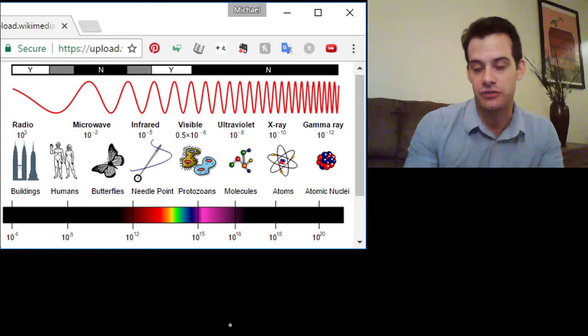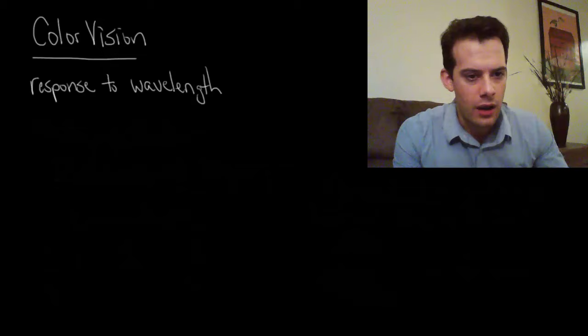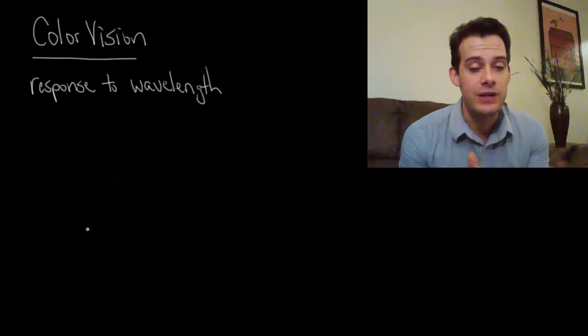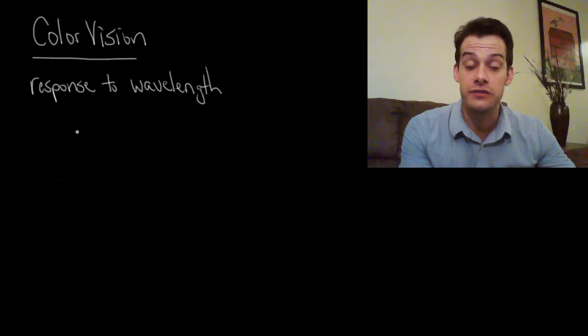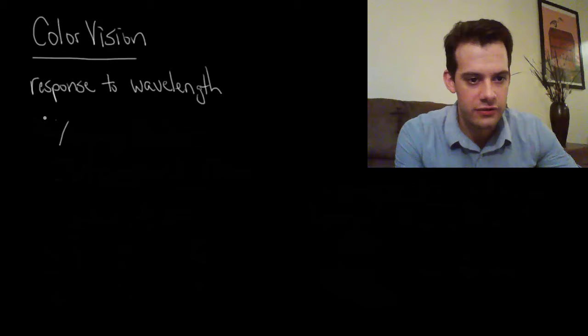Okay so let's get back to color. Alright so we have these different frequencies we can see and what happens is we sort of divide them up. We see them as different colors and that's our perception. That's happening in our mind. They're just different wavelengths of light. So the question is how do we do this process of categorizing these different wavelengths into different colors?